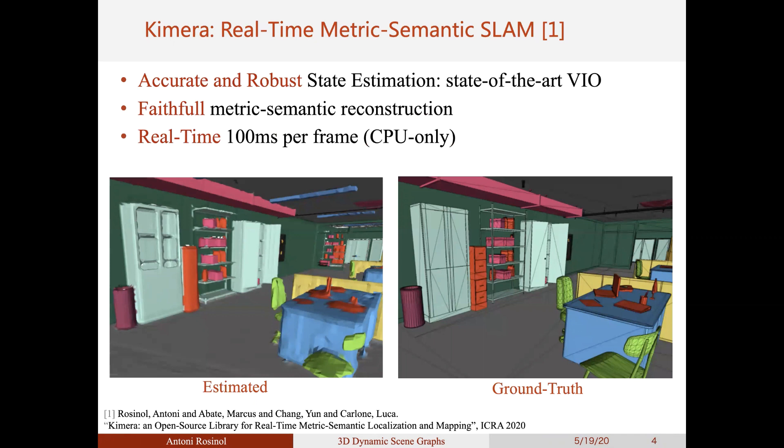Therefore, previous to this work, we tackled the problem of 3D scene understanding by developing and open sourcing a real-time metric semantic SLAM pipeline that we named Chimera, which is able to reconstruct the 3D geometry while semantically annotating the scene by just using visual and inertial data, everything while operating in real-time.